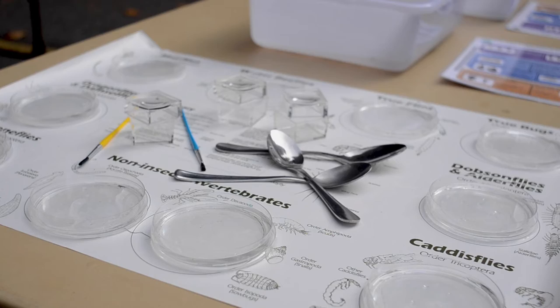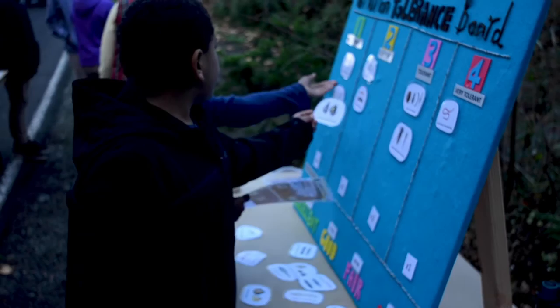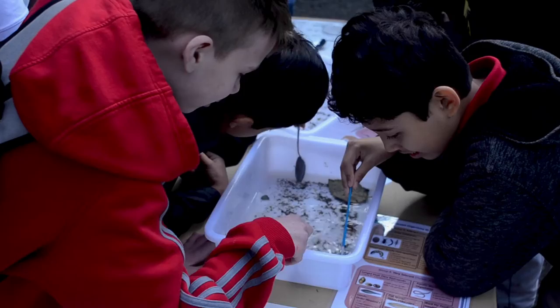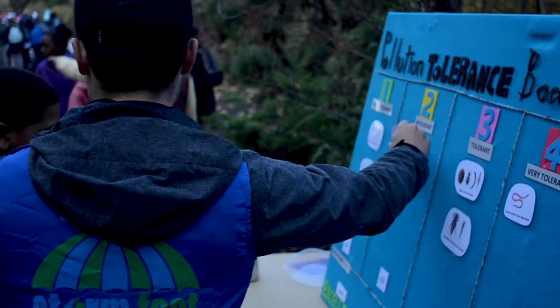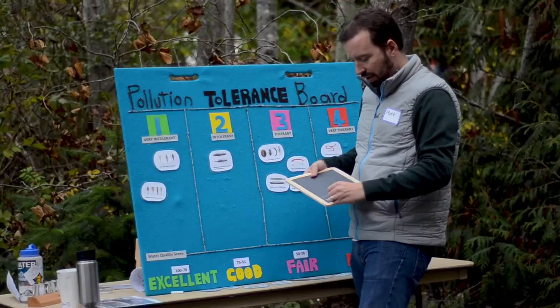Educators will then explain the investigation. In teams, students will sort and identify macroinvertebrates in their sample using the laminated ID sheet. One student from each team will go to the Pollution Tolerance Index Board, find the laminated bug that matches the bug in their sample, and stick it on the correct level of the tolerance board. Teams will repeat this with the other bugs they find. The class will come back together at the Pollution Tolerance Index Board to look at their results and come up with a group score to determine the health of the stream and its habitat.